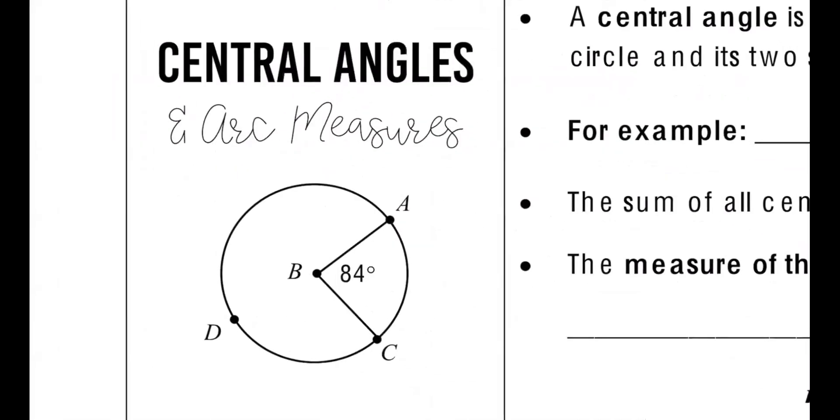So what we're talking about, we kind of talked about this last time in our vocabulary, central angle. So we have a circle. We have a center of a circle, right? That point. And that's the name of the circle. This would be circle B. And then from the center to the end of the circle, to a point on the end of the circle, it's called the radius.